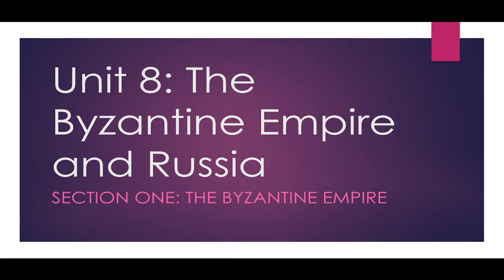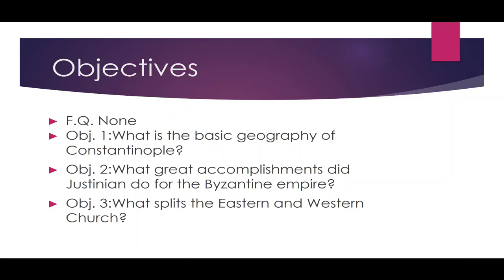We're now in Unit 8, the Byzantine Empire. We're going to be talking about the Byzantine Empire and Russia, and specifically the emergence of the Byzantine Empire, starting about 200 AD and going through the 15th century. We'll be talking primarily about Constantinople and specifically about Justinian, one of the greatest emperors in Constantinople. This is going to be a pretty short section of notes.